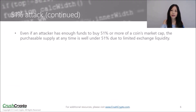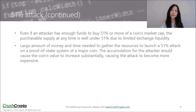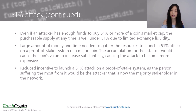Even if an attacker has enough funds to buy 51% or more of a coin's market cap, the purchasable supply at any time is well under 51% due to limited exchange liquidity. It would take a large amount of money and time to gather the resources in order to launch a 51% attack on a Proof of Stake system of a major coin. At the same time, the accumulation for the attacker would cause the coin's value to increase substantially, causing the attack to become more and more expensive. There is also a reduced incentive to launch a 51% attack on a Proof of Stake system, as the person suffering the most from it would be the attacker that is now the majority stakeholder in the network.